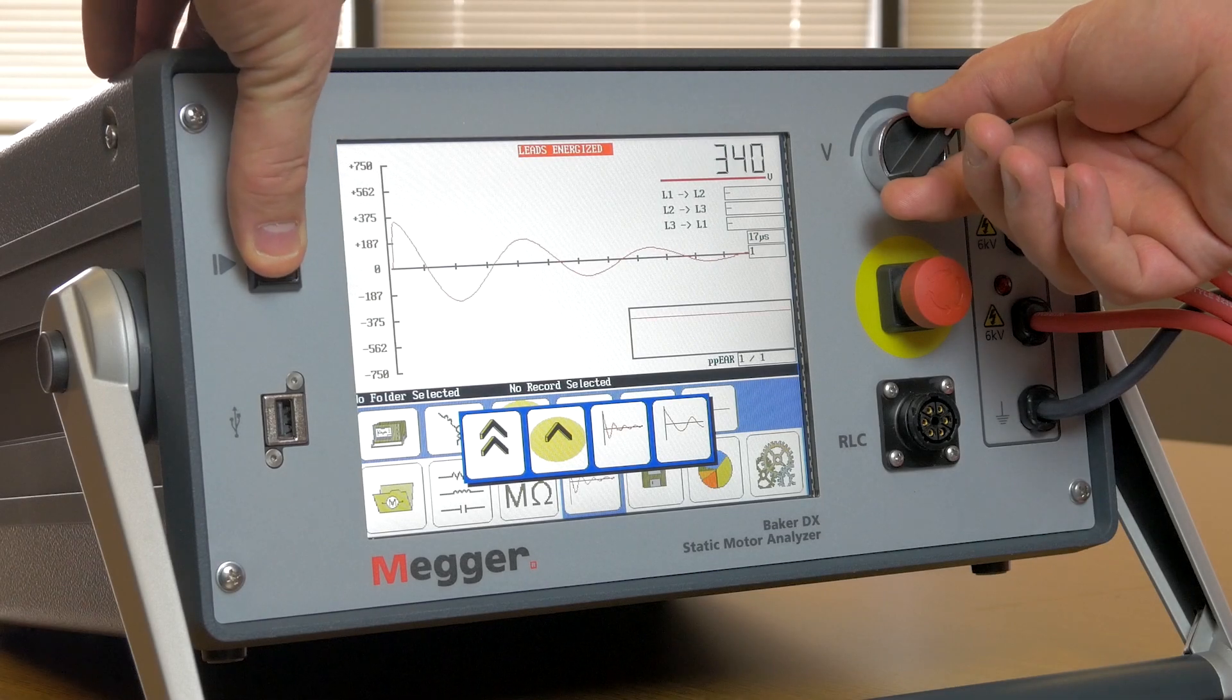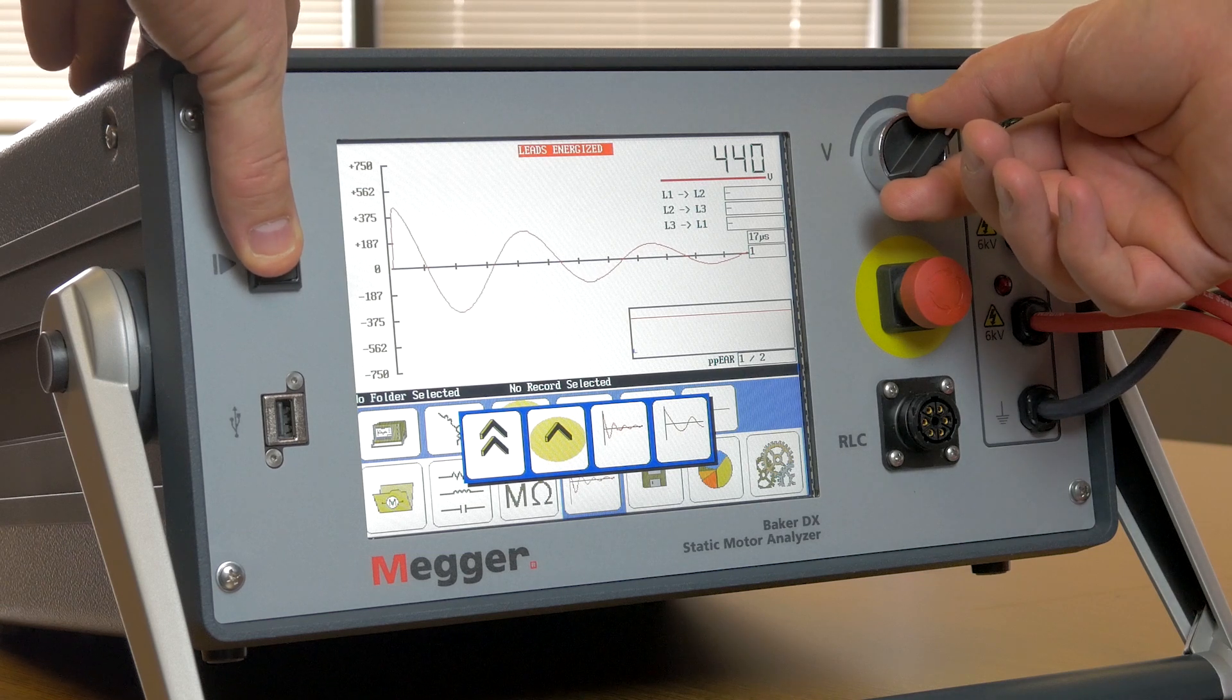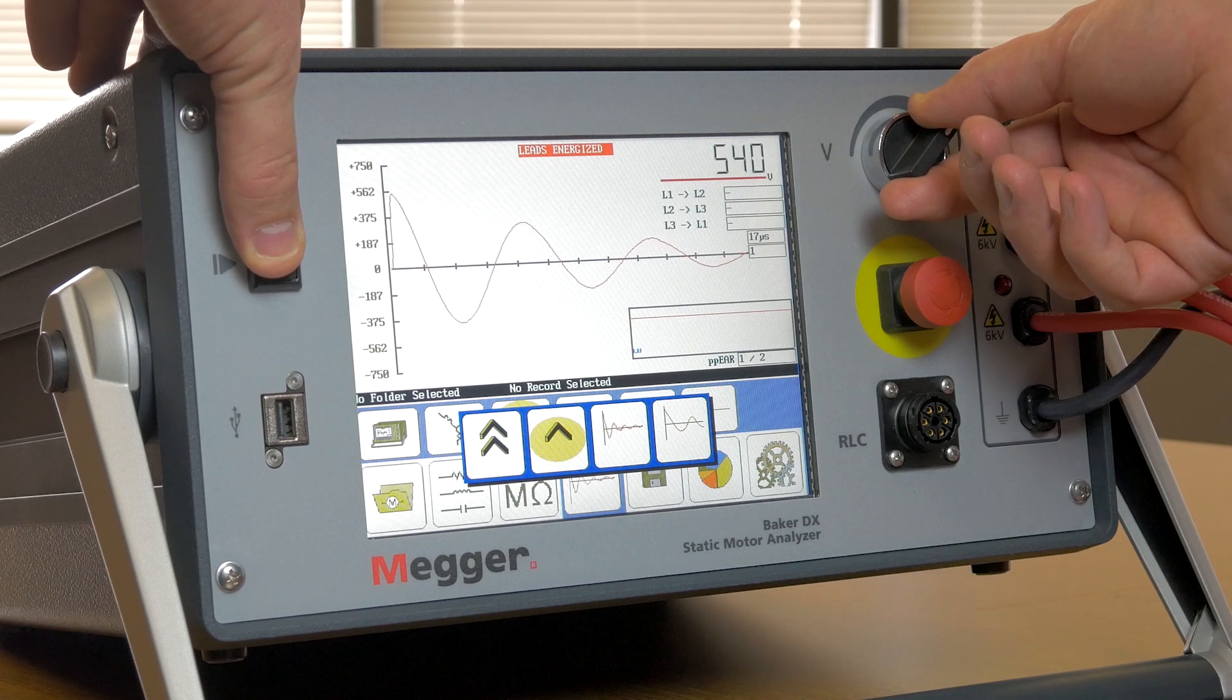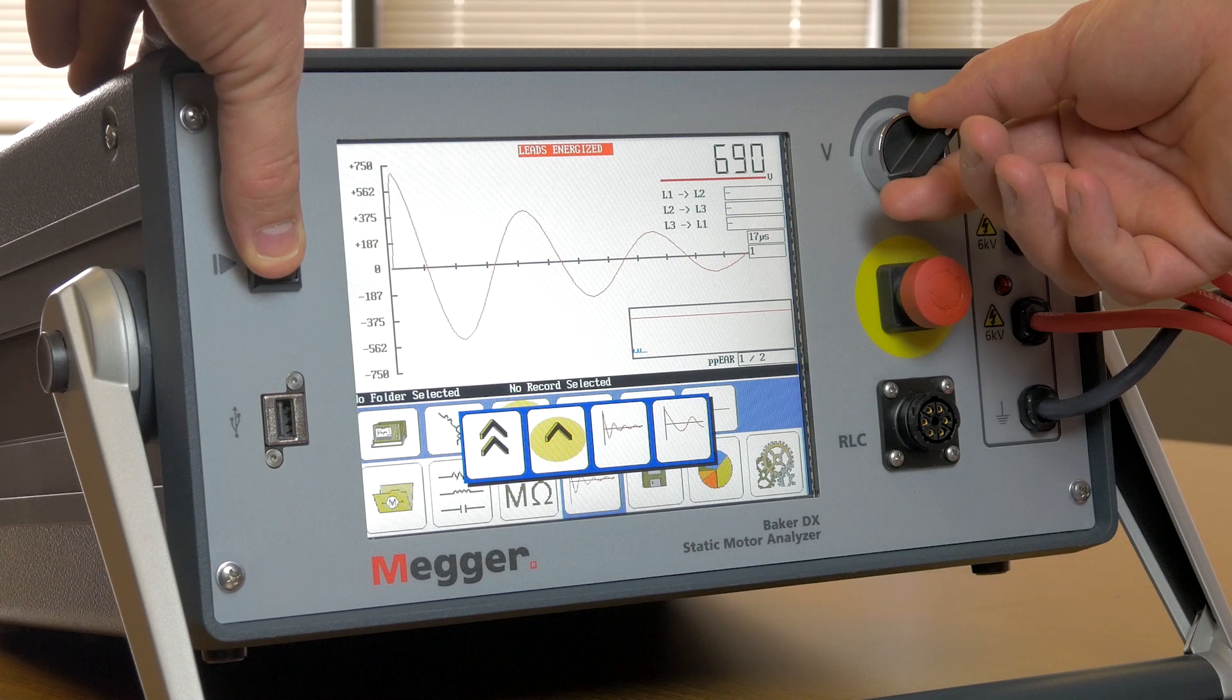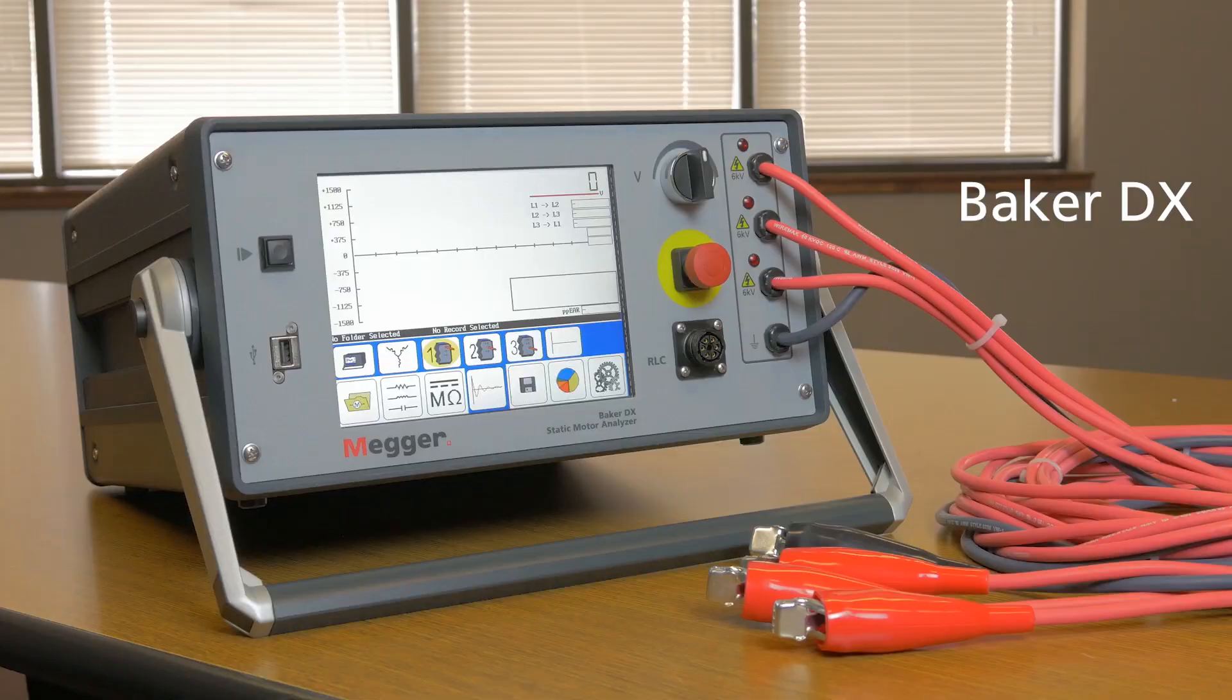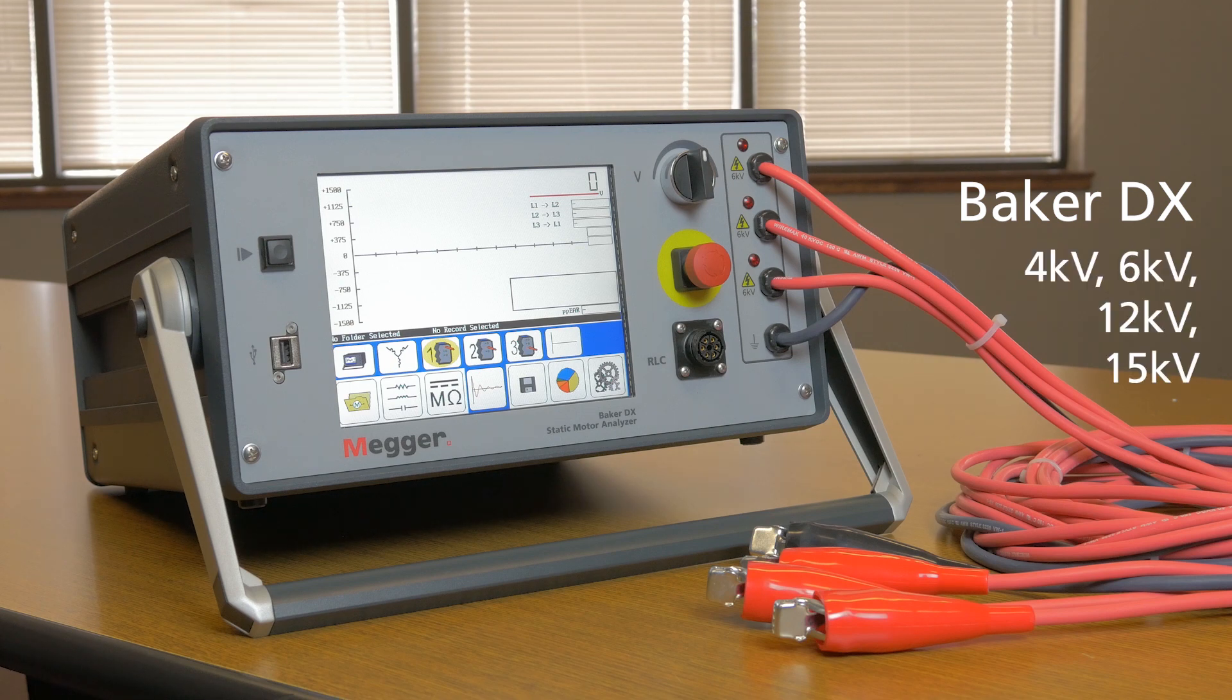The DX family of static motor testers are small, light, manually operated testers ideal for motor repair and rebuilders and for predictive maintenance customers on a budget. The DX family has models with maximum test voltages of 4kV, 6kV, 12kV and 15kV. High output models are available for both the 6kV and 12kV models.